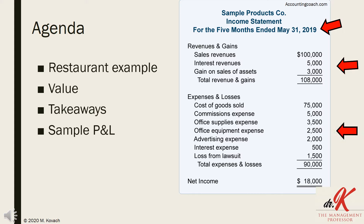The second section, or bottom half, are the expenses, which is any money going out of the organization. This is also categorized into multiple line items. And the very last line is net income. As you can see, subtracting $90,000 from $108,000 leaves you with a bottom line income of $18,000.